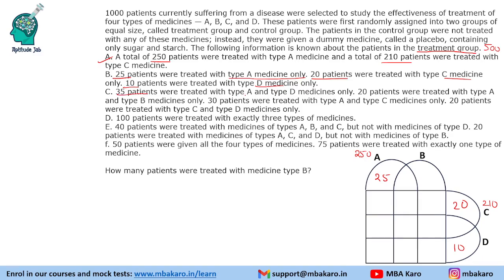35 patients were treated with type A and type D medicines only — so this A-and-D overlap region is 35. 20 patients were treated with A and B only, so 20 goes in that part. 30 patients with A and C only — so this is 30. And 20 patients with C and D only — so 20 here.